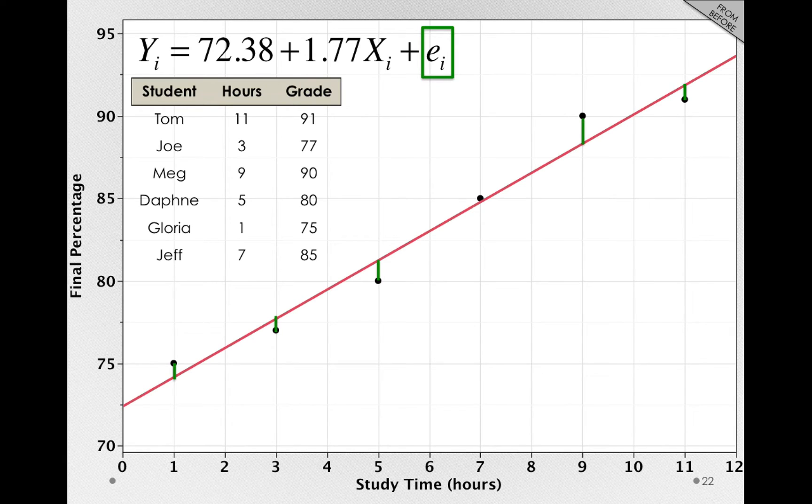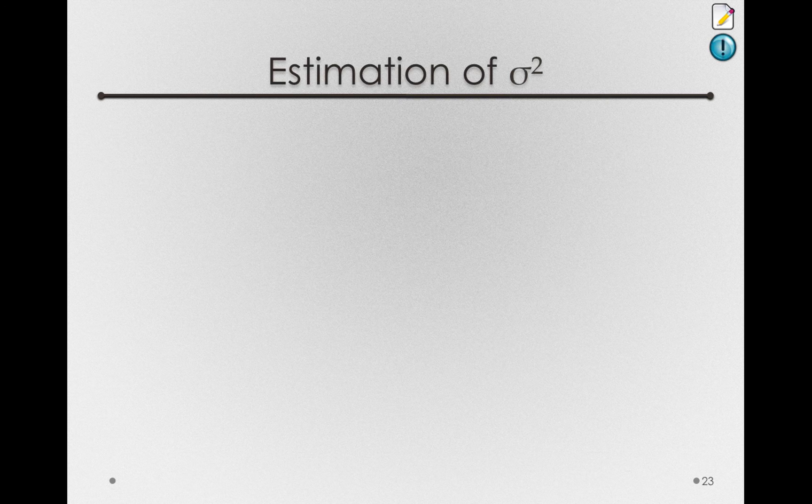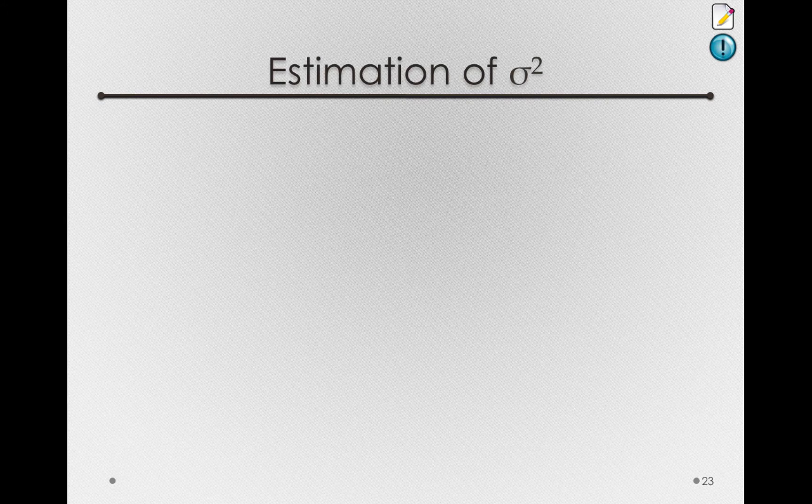Now we'll use the e sub i's in our sample to make an estimate of the population epsilon. Specifically, we'll be interested in the variance of error in the population. Just like before with our linear models, the variance of error gives us an idea about how stable our regression estimates will be. So we'll need to estimate sigma square in the population on the basis of these e sub i's.